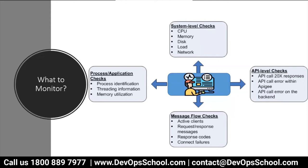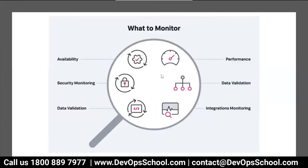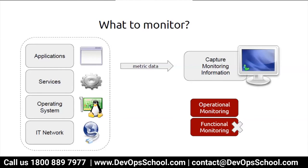If I give you a tool and ask you to set up monitoring, you would monitor process memory, threading, CPU, memory, disk, load, and network. You'd monitor API calls — whether they're up and running, what response codes you're getting from endpoint URLs. You'd also monitor the internals of the servers and systems.